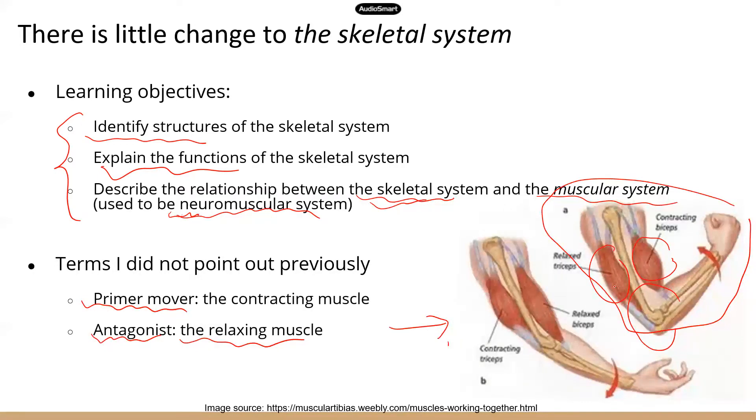And then when you extend the elbow joint, you can see now the biceps muscle is relaxed, and the triceps muscle is contracting. So that's kind of what those two terms mean - the muscles that are, the pair of muscles that are doing kind of the opposite job when they move the bones.